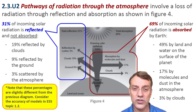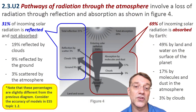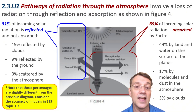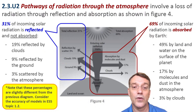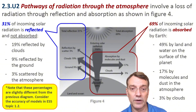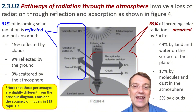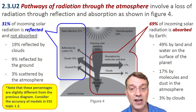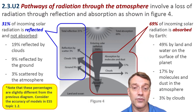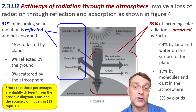Looking more closely at radiation pathways, we see that about 31% of incoming solar radiation is reflected and not absorbed at all, through processes like cloud reflection, ground reflection, and atmospheric scattering. The other 69% is absorbed by Earth through land, water, atmospheric molecules, and clouds.